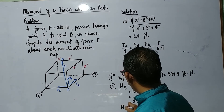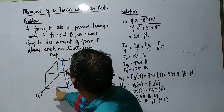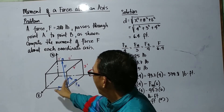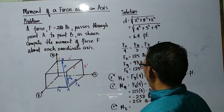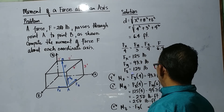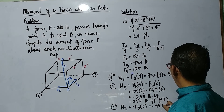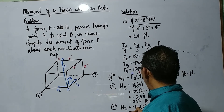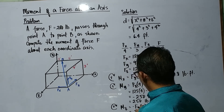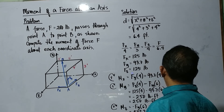For our moment at Z: along the Z axis, Fx will not rotate because it goes into the X axis; Fy will not rotate either because it is parallel. But Fy will rotate and it is counterclockwise, so we have negative Fy times 6, or negative 93.7 times 6. Our Mz now equals 562.2 pound-feet. So these are your answers.